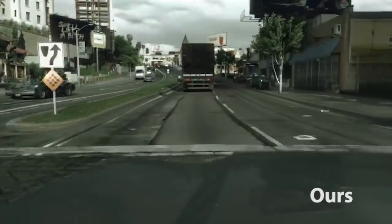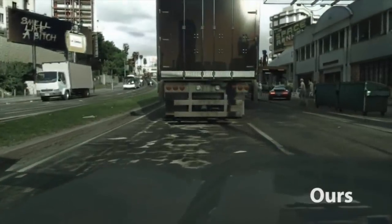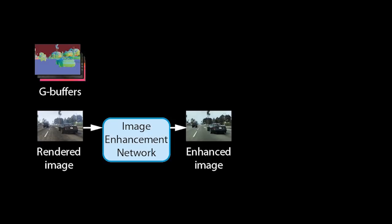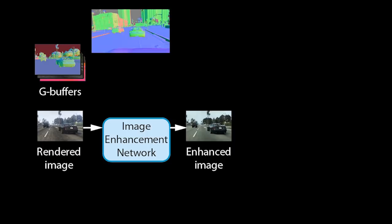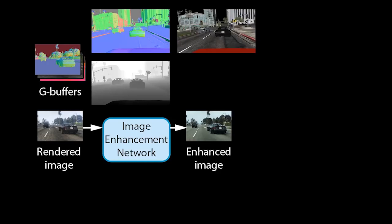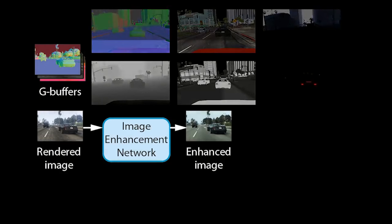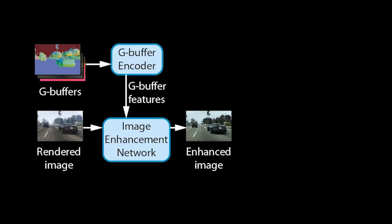Let us now look at our method in detail to understand why it is more stable and produces fewer artifacts. Our method takes a rendered image from the game and passes it through an image enhancement network to produce an enhanced image. We further extract a set of rendering buffers, called G-buffers, produced by the game engine. G-buffers contain geometric information such as surface normals or distance to the camera, material information such as albedo or glossiness, and may also contain information about the lighting in a scene. We pass the buffers through a G-buffer encoder network to produce feature tensors at multiple scales.